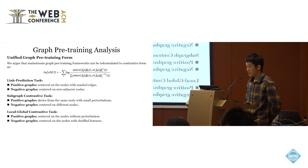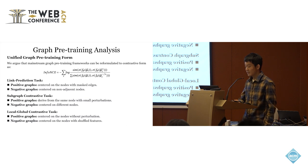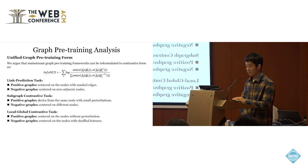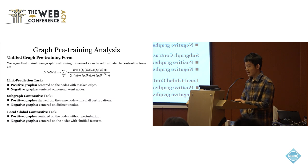For example, in the link prediction task, the positive samples are the subgraphs centered on the nodes with masked edges, and the negative samples are the subgraphs centered on non-adjacent nodes. And in the subgraph contrastive task, the positive samples are the subgraphs derived from the same nodes, and the negative samples are the subgraphs centered on different nodes. And for the local-global contrastive task, the positive samples are the subgraphs without perturbation, while the negative samples are the subgraphs with shuffled features.